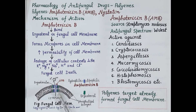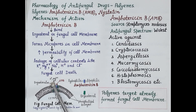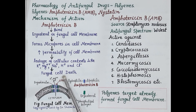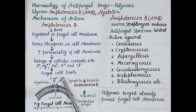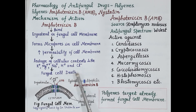They align themselves such that their hydrophilic side forms the interior of the micropore. This increases permeability of the cell membrane, and thus ions like potassium, magnesium, sodium, hydrogen, chloride, amino acids, and other water-soluble substances move out of the cytoplasm. This leakage of cellular content causes fungal cell death.